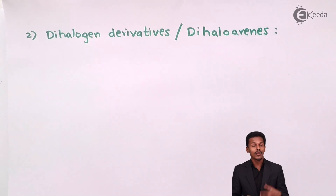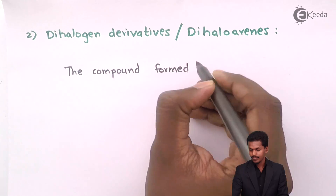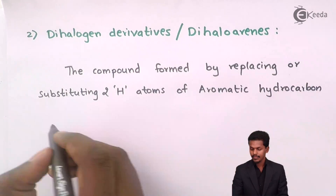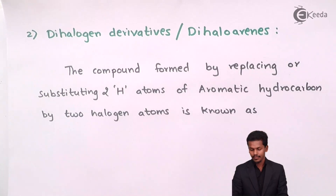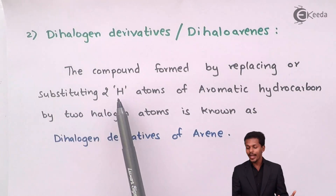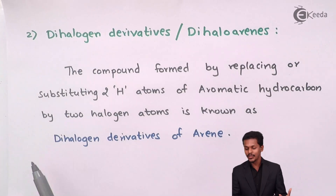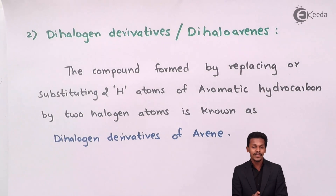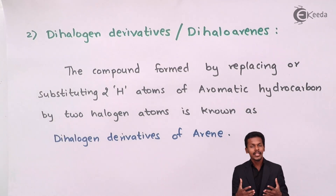The next classification is dihalogen derivatives of arenes, or dihaloarenes. The compound formed by replacing or substituting two hydrogen atoms of the aromatic hydrocarbon with two halogen atoms is known as dihalogen derivatives of arenes. This definition applies to any aromatic hydrocarbon consisting of two halogen atoms. Let me give you an example to understand how many dihalogen derivatives of arenes are possible if we take benzene as the main hydrocarbon.